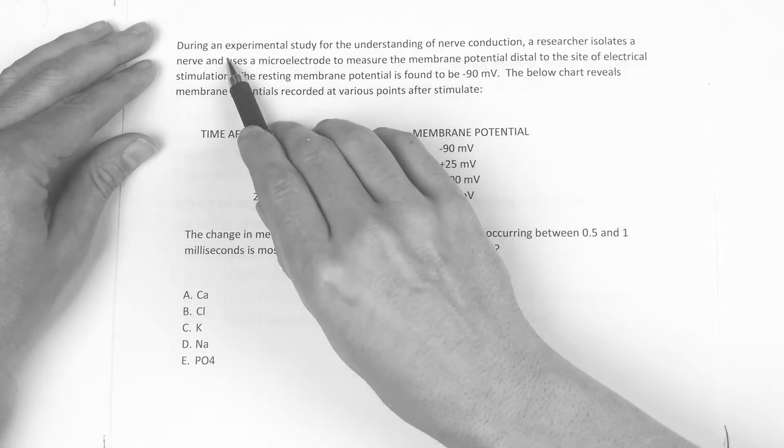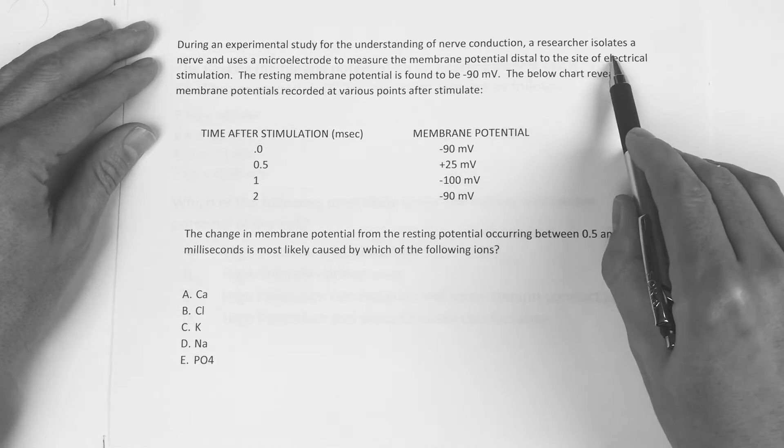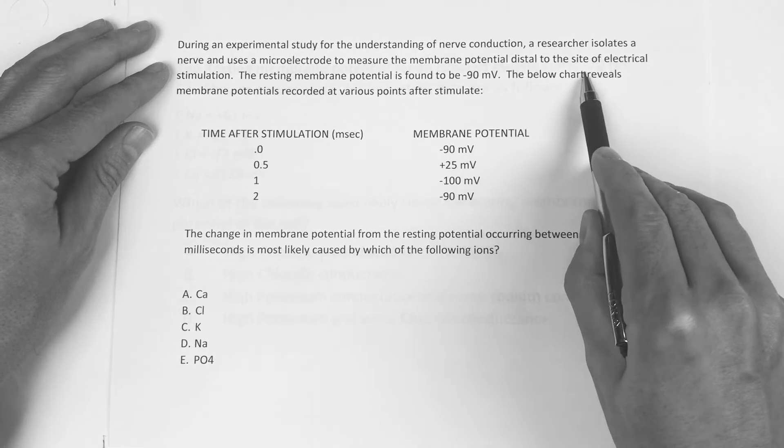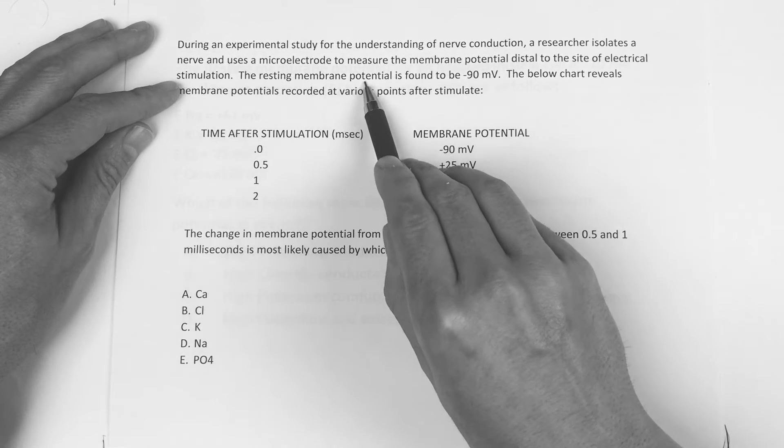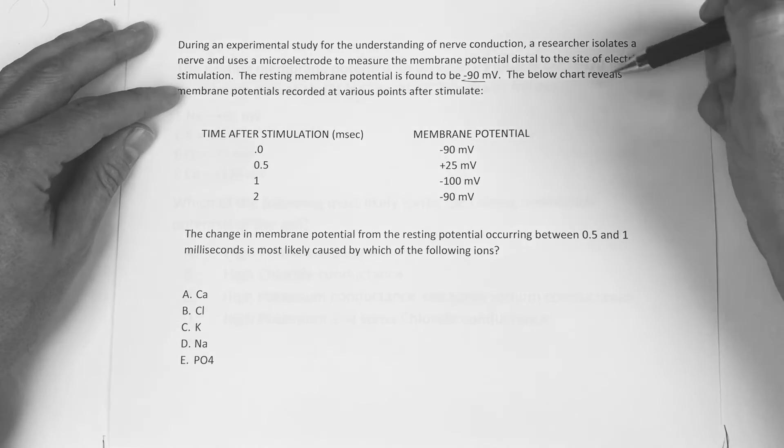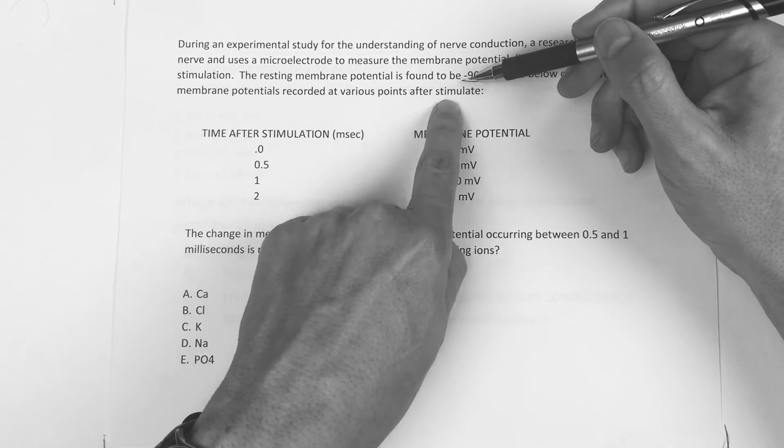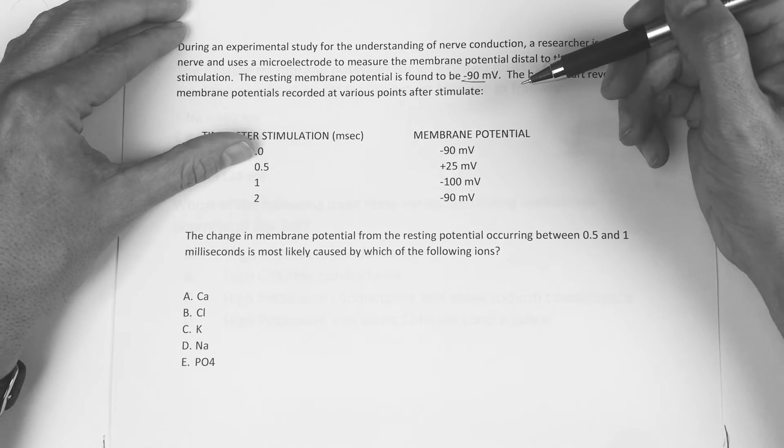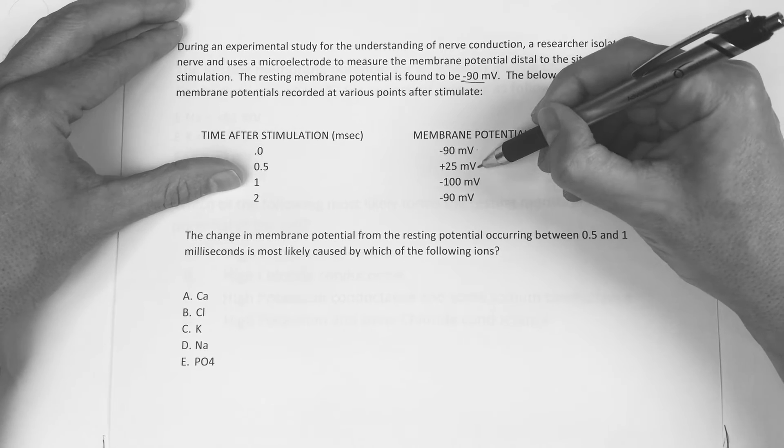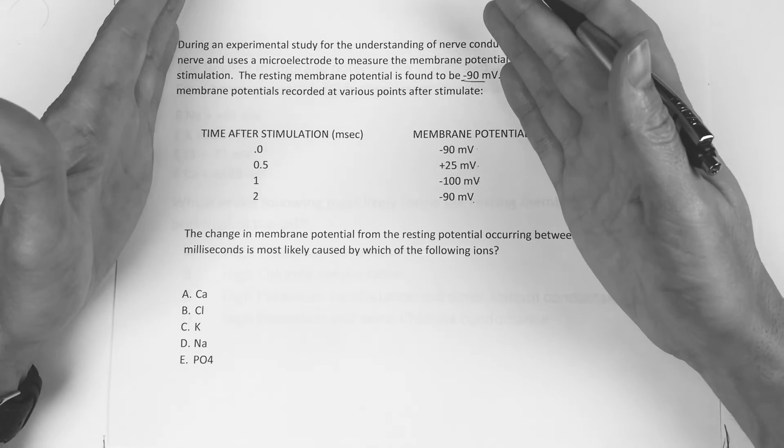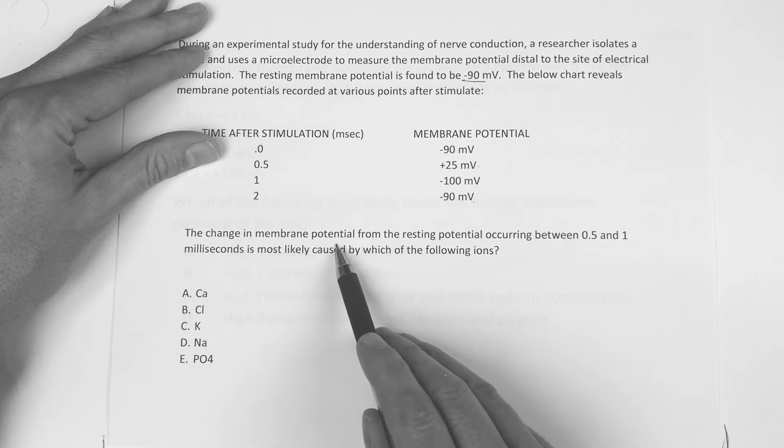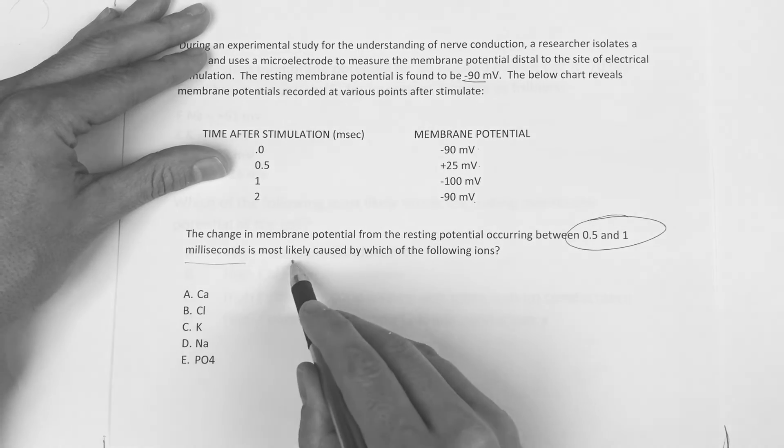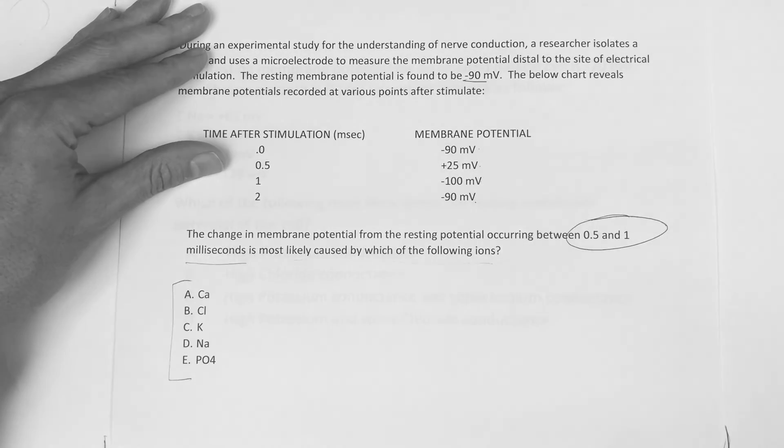This one. During an experimental study for the understanding of nerve conduction, a researcher isolates a nerve and uses a microelectrode to measure the membrane potential distal to the site of electrical stimulation. The resting membrane potential is found to be negative 90. The below chart reveals membrane potential is recorded at various points after stimulate. So at zero time it's negative 90. At 0.5 it's 25. And then back to negative 100. So to me this is very confusing.